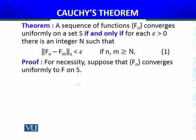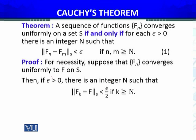इसका मतलब यह है कि ‖f_n − f‖ over the set S, as n approaches infinity, equals 0। Epsilon-delta में इस definition को लिख सकता हूँ: for every epsilon greater than 0, there exists an integer N — जो कि सिर्फ epsilon पर depend करता है, x पर नहीं — such that ‖f_k − f‖ less than epsilon by 2, if k is greater than N।